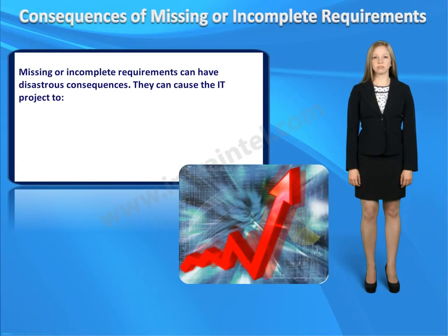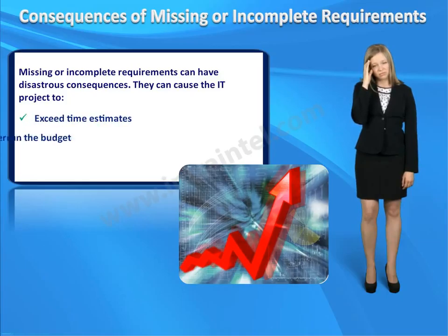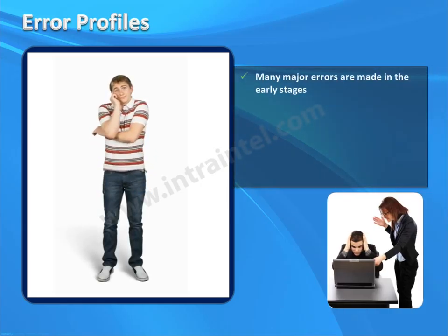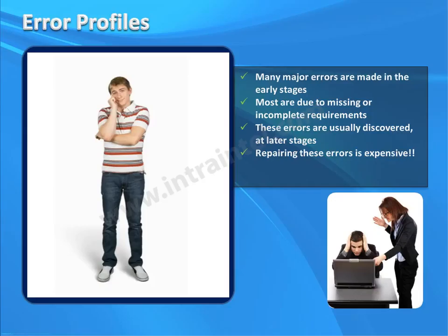Missing or incomplete requirements can have disastrous consequences. They can cause the IT project to exceed time estimates, overrun the budget, and fail to meet user requirements. Missing or incomplete requirements are the most common cause of software errors. It's important to understand that many errors are made in the early stages — most are due to missing or incomplete requirements — and these errors are usually discovered at later stages when repairing them is expensive. Most errors can be prevented by testing early.